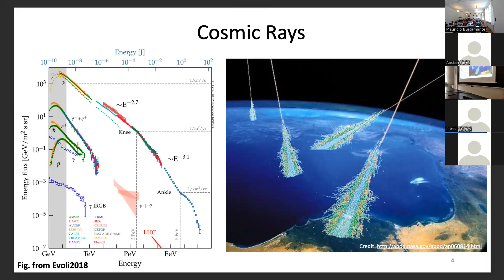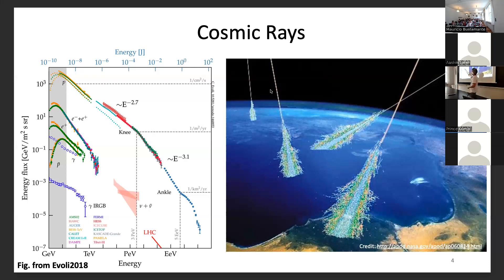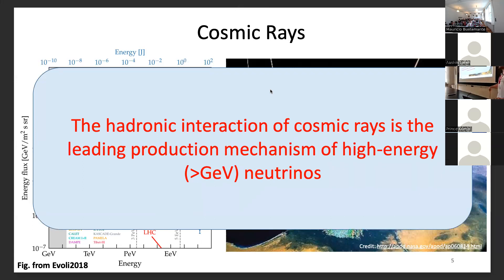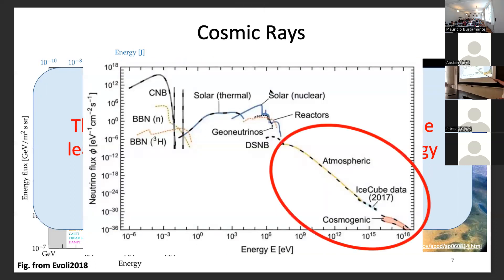First of all, let me repeat what cosmic rays are and why they are interesting for people studying neutrinos. Cosmic rays are relativistic particles of cosmic origin hitting the top of the atmosphere at a very high rate. As you can see from the spectrum, they are dominated by hadrons, namely protons, and this is why they are relevant for high energy neutrinos. Indeed, hadronic interactions of cosmic rays are the leading production mechanism of high energy neutrinos in the overall neutrino spectrum that we observe.